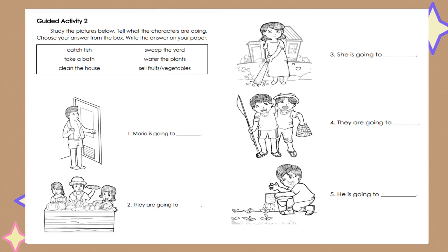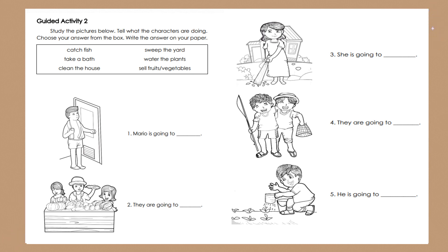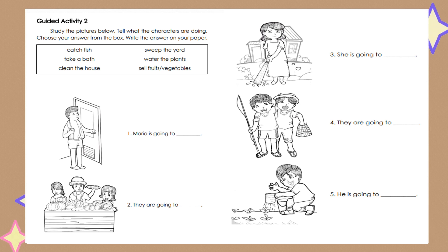For guided activity 2, study the pictures below. Tell what the characters are doing. Choose your answer from the box and write the answer on your paper. Here are the choices: catch a fish, take a bath, clean the house, sweep the yard, water the plants, sell fruits or vegetables. In order for you to answer this, you have to take a closer look at the picture to know the description fitting for it. Number 1: Mario is going to blank. Number 2: they are going to blank. Number 3: she is going to blank. Number 4: they are going to blank. Number 5: he is going to blank.